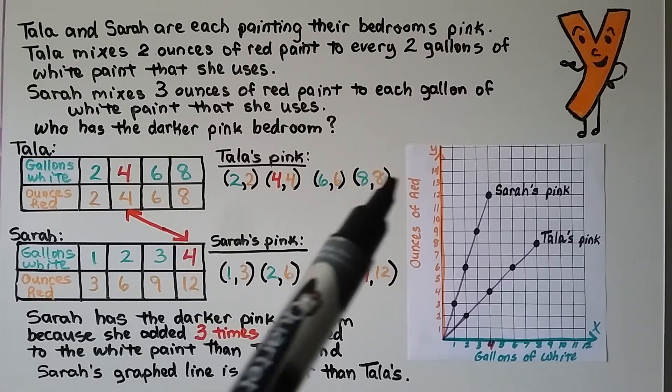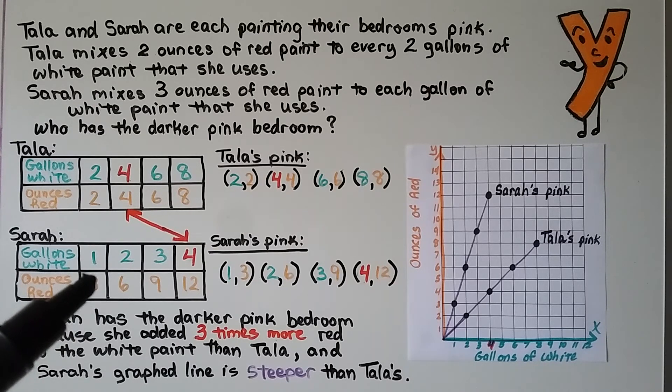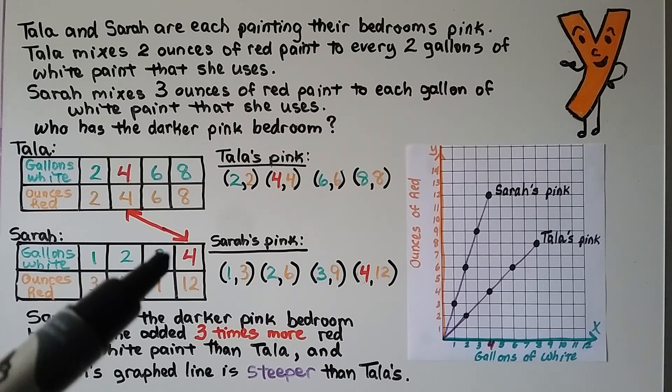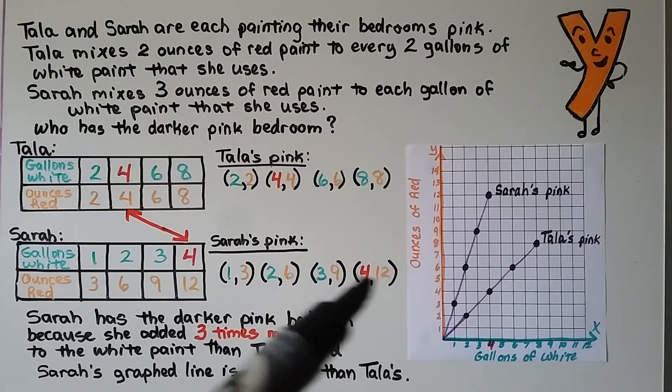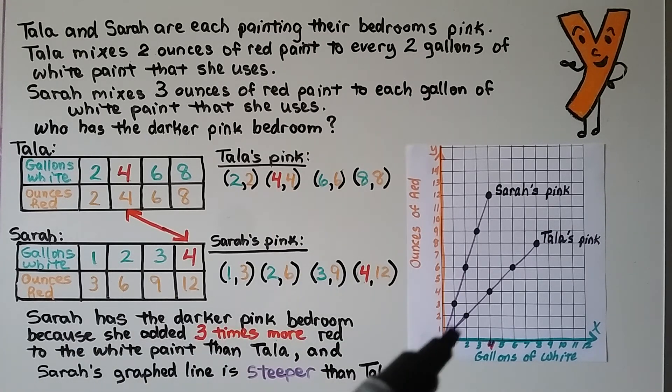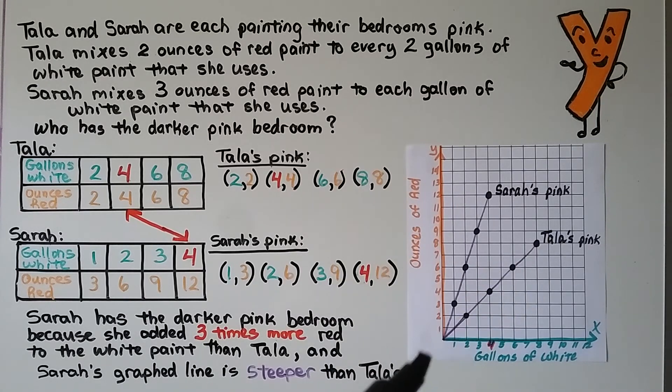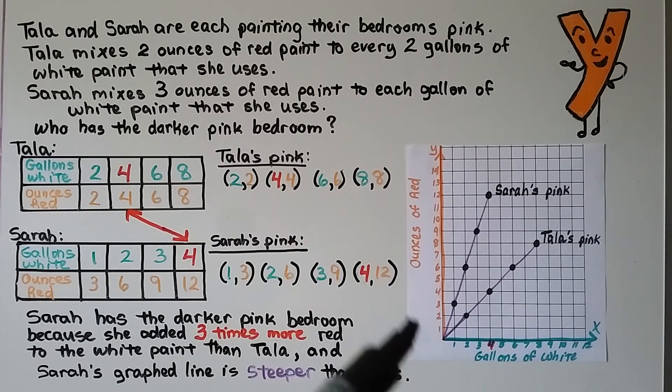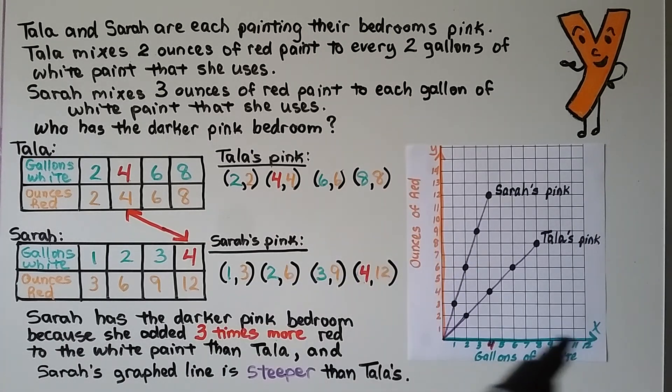We fill out the table and the sequences for Tala. 2 gallons of white is 2 ounces of red. That means 4 gallons of white is 4 ounces of red. And 6 gallons of white is 6 ounces of red. And 8 is 8. So we have the ordered pairs, the number pairs for Tala's pink. For Sarah, 1 gallon of white is 3 ounces of red. And so that means 2 gallons would be 6 ounces. 3 gallons would be 9 ounces. And 4 gallons would be 12 ounces. And we write the number pairs, the ordered pairs for Sarah's. We can graph their ordered pairs. We can see this is Tala's line. It's not as steep as Sarah's line. This is Sarah's pink. These are the ounces of red. Sarah used more ounces of red. And here's the gallons of white.